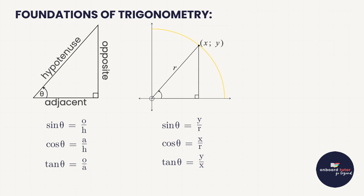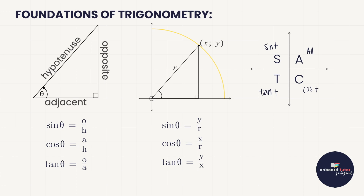We then branched out into all four quadrants, which is where we encountered the CAST rule. The CAST rule helps us remember which ratios are positive in which quadrants. In quadrant one, all ratios are positive. In quadrant two, sine is positive, so tan and cos are negative. In quadrant three, tan is positive, so sine and cos are negative. In quadrant four, cos is positive, so sine and tan are negative.